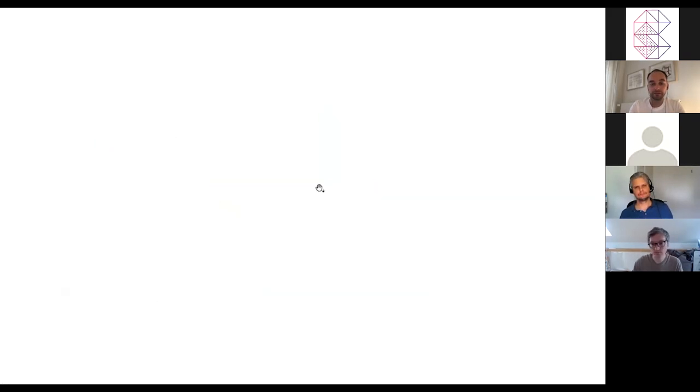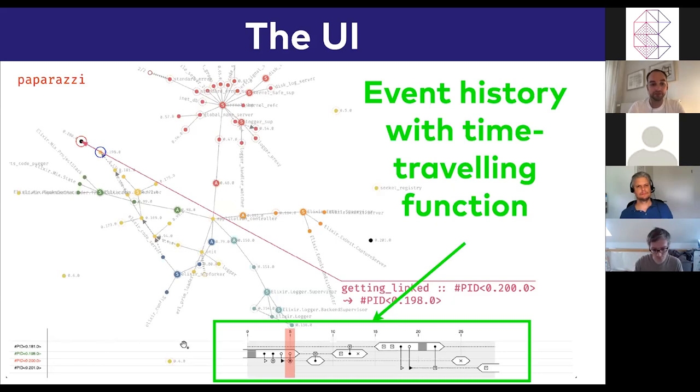The next UI element is in the bottom of the screen, which is the event history with the time traveling function. What is important to know is that this reddish rectangle represents the current event in focus. It shows the zero, which is the moment that the capture of the traces, the capture of the events, has been started. And what basically this tool does is that it builds up from that initial capture and applies all the single events into the graph and also this space here, how they interact with each other.